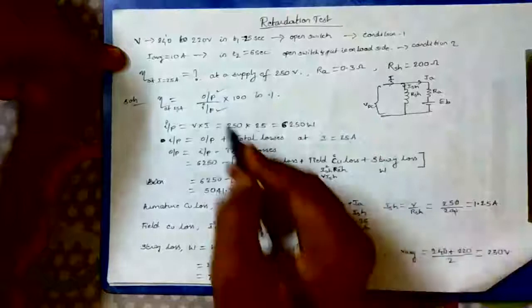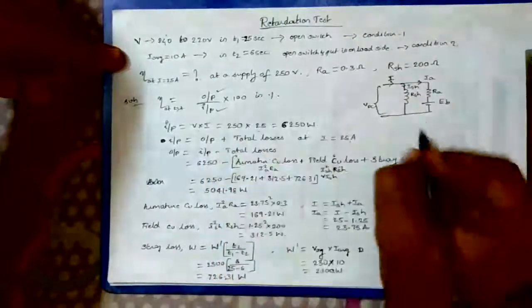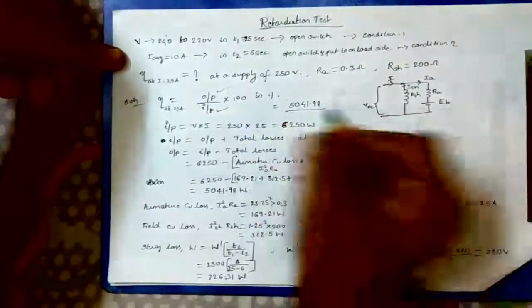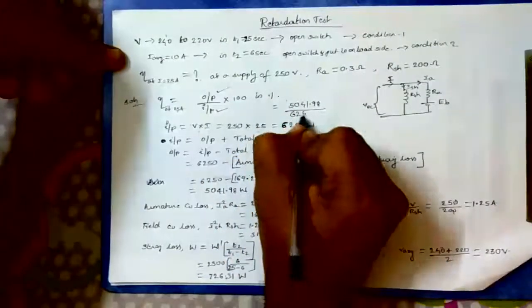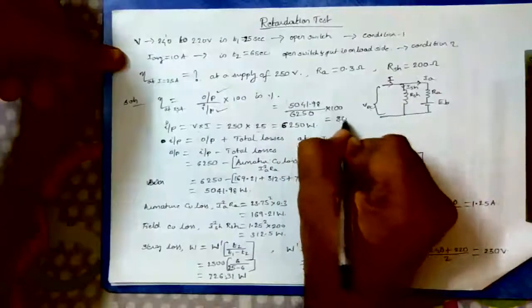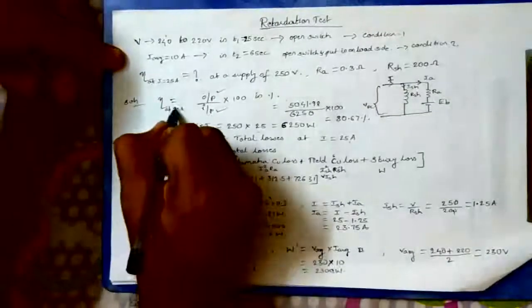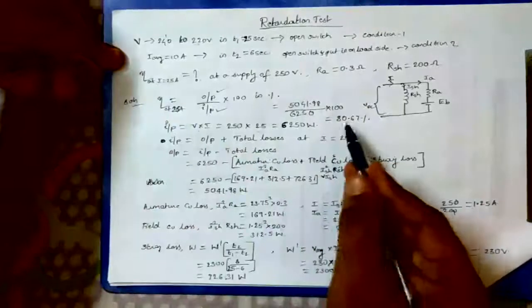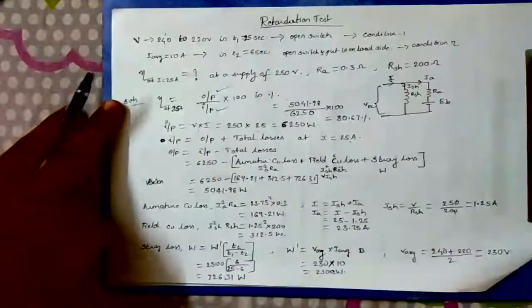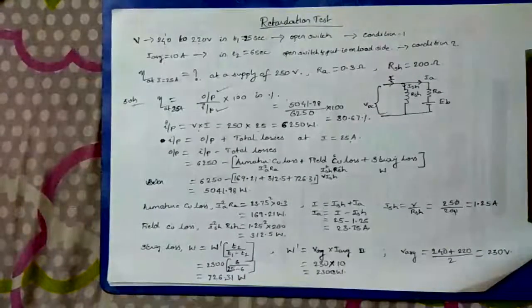Now I got output. Input we have calculated earlier. Just substitute output as well as input, multiply by 100, you will get the answer. Output is 5041.98 divided by input 6250 into 100. If I do calculation, I would be getting 80.67 percentile. That is efficiency of motor while delivering 25 ampere. This is how we calculate in retardation test. This is just a problem where we have calculated the efficiency of the motor when delivering 25 amperes.